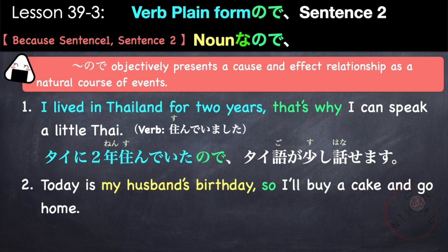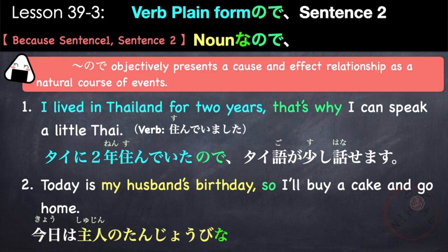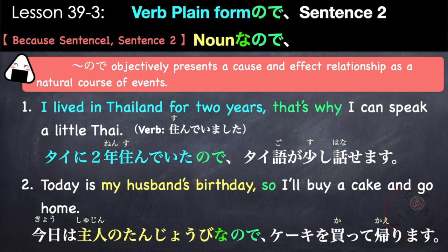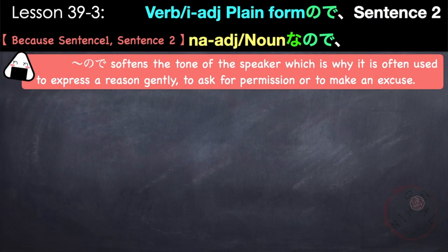Another example: 今日は主人の誕生日なので、ケーキを買って帰ります。 Today is my husband's birthday, so I'll buy a cake and go home. Also, ので softens the tone of the speaker, which is why it is often used to express reasons gently — to ask for permission or make an excuse. から is used for informal situations, while ので is more formal and polite.